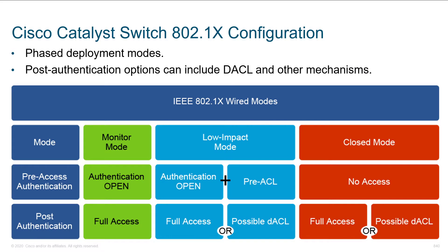Let's take a moment to compare the different deployment modes for 802.1x. In the top row you'll find the different modes: monitor mode, low impact mode, and closed mode. Closed mode is typically what our objective is — that's our goal. Before you authenticate, there's no access that's granted.